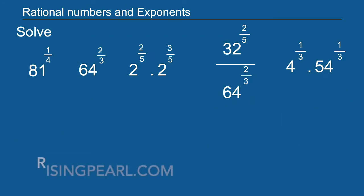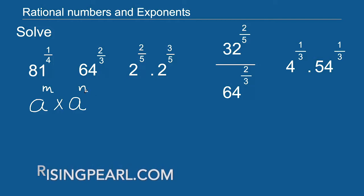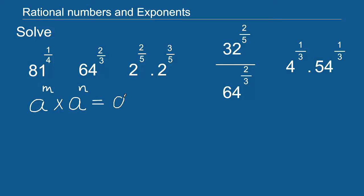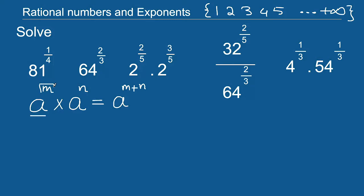We have learned from our earlier grades that if we have a natural number a raised to exponent m, and we multiply this by the same base a raised to the power n, where m and n are also natural numbers, we know that this can be written as a to the power of m plus n — we simply add the exponents. Natural numbers are simply the collection of numbers 1, 2, 3, 4, 5, all the way to positive infinity. So if a is a natural number and m and n are also natural numbers, then this is always true.